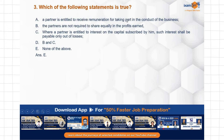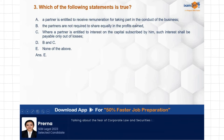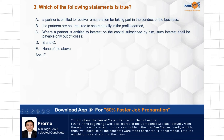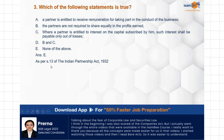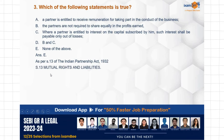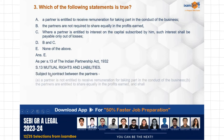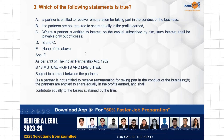Partners do not get remuneration; they are not doing a job but running the business. They share equal liability and get an equal share in profits. So all three statements are false. These are understood from mutual rights and liabilities under Section 13, subjected to contract between the partners.